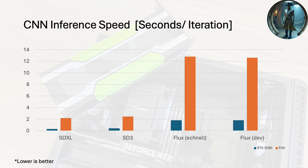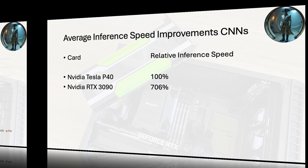We've tested four different model versions: SDXL, SD3, and two versions of Flux — Flux Schnell and Flux Dev. The graph shows the time taken per iteration where lower is better, since you want to generate around 30 to 60 iterations for normal versions, and 4 to 8 or 9 iterations for fast versions. Once again the RTX 3090 really outperforms the P40 across all models. The difference is particularly striking with the Flux models but also with Stable Diffusion XL, where the RTX 3090 just rips apart the P40, and this performance gap is really crucial if you want to create image generations.